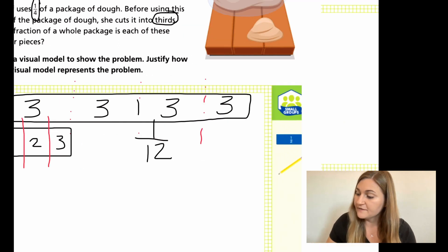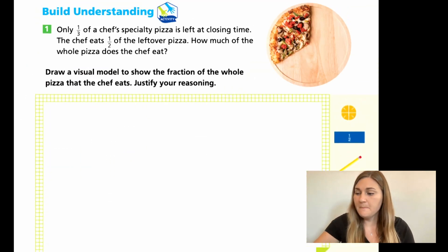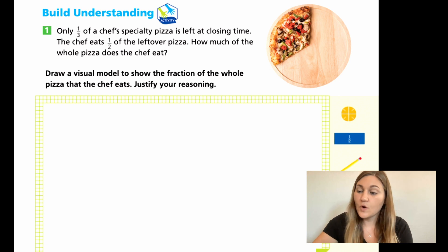Alright, let's go ahead and flip the page to 192. Number one says only one third of a chef's specialty pizza is left at closing time. The chef eats one half of the leftover pizza. How much of the whole pizza does the chef eat? Alright. And it's showing you that one third over to the right. That's showing you the pizza.